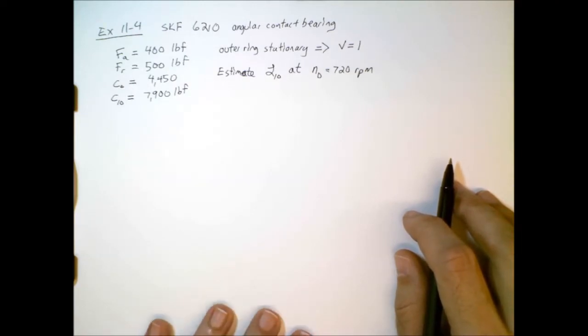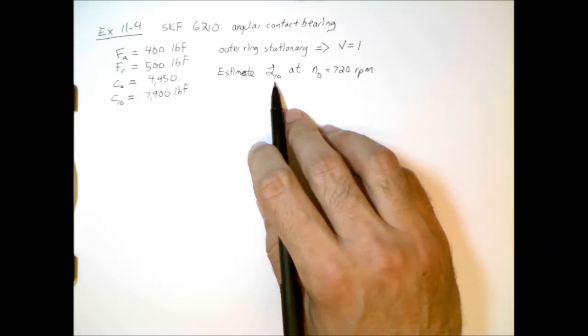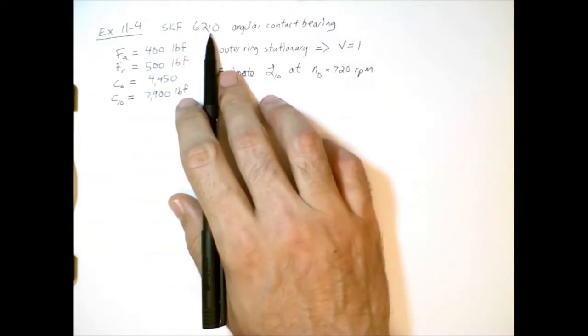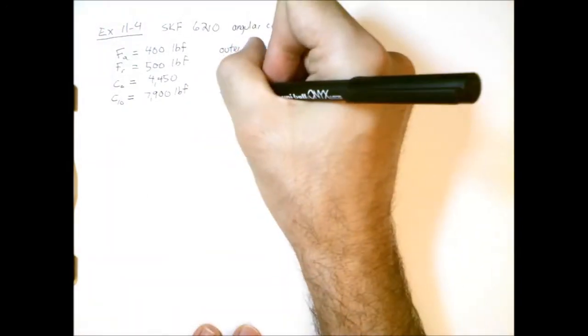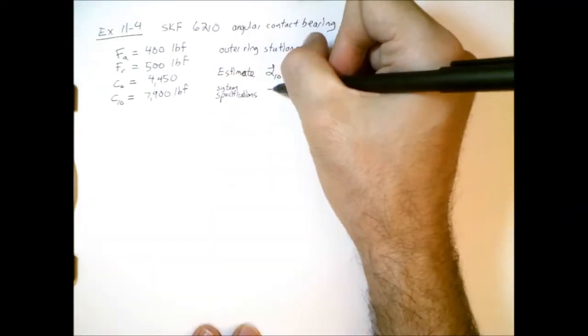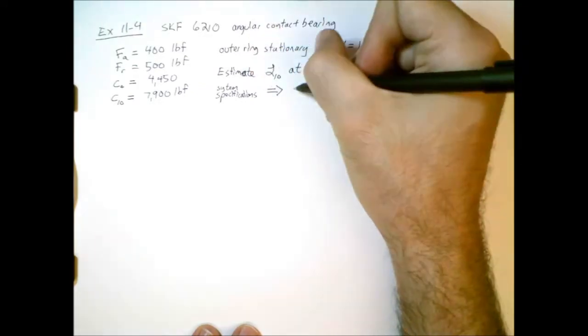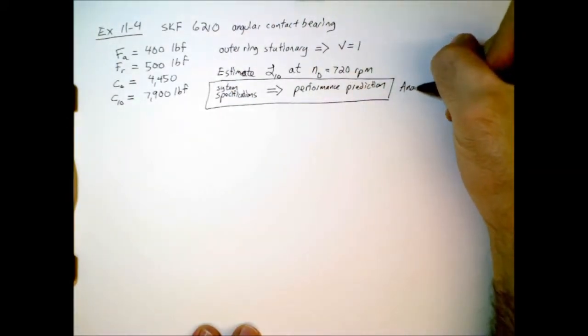There are a couple of things to point out here. So here, the L10 life, this happens to be the design life. So that simplifies the problem. Also, notice that this is not a design problem. This is an analysis problem. We are given a bearing, and we're trying to find out how long it's going to last. So in other words, we are starting with system specifications and we'd like to make a performance prediction. This is an analysis process.